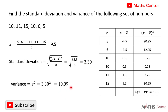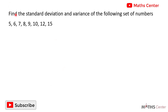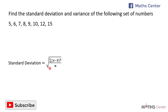Let's consider the next question. Find the standard deviation and variance of the following set of numbers: 5, 6, 7, 8, 9, 10, 12, and 15. The standard deviation is equal to the square root of sigma (x minus the mean) squared divided by n. When we count the numbers we have 1, 2, 3, 4, 5, 6, 7, 8 — so n is equal to 8.